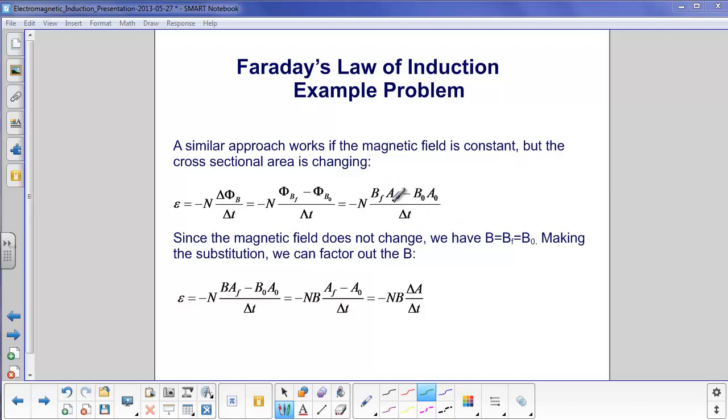Now, in this case, the area is changing, but the magnetic field is the same. So we're going to replace BF and B zero just with B. We put it into the equation. We can factor out the B.